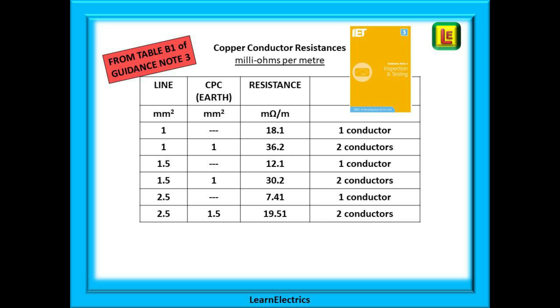So 2 meters length would be 36.2 milliohms, and 10 meters would be 10 times 18.1 or 181 milliohms. Now look at the bottom row for 2.5 phase or line cable with a 1.5 millimeter CPC or earth. This is 19.51 milliohms per meter, all the way along one conductor and all the way along the other.